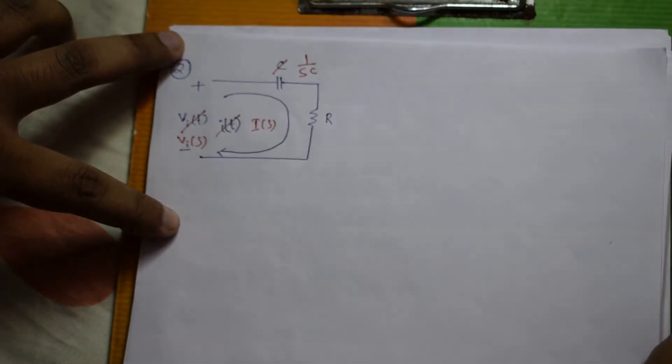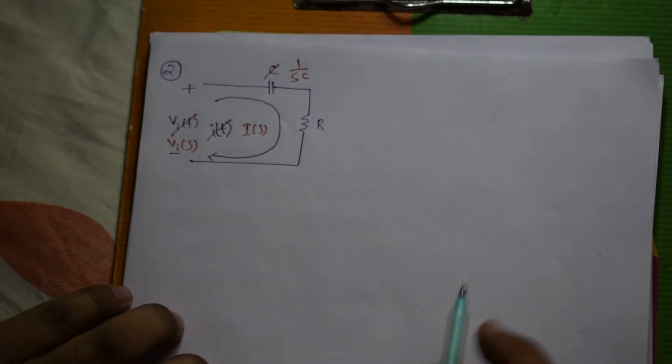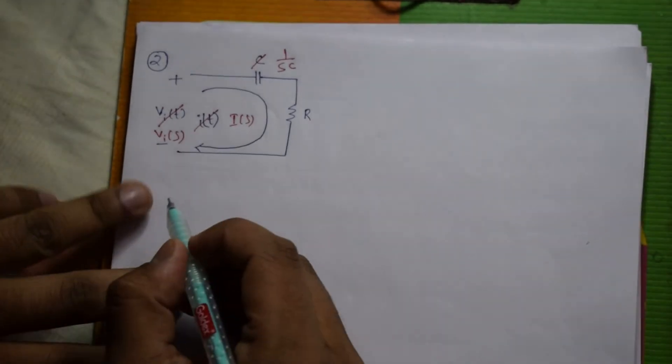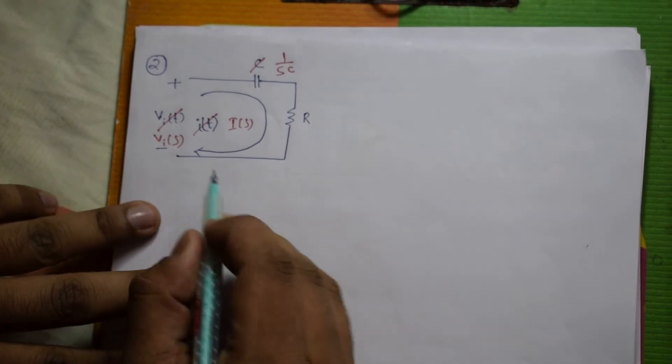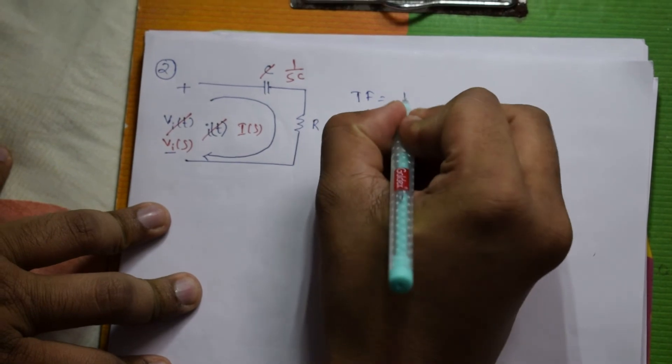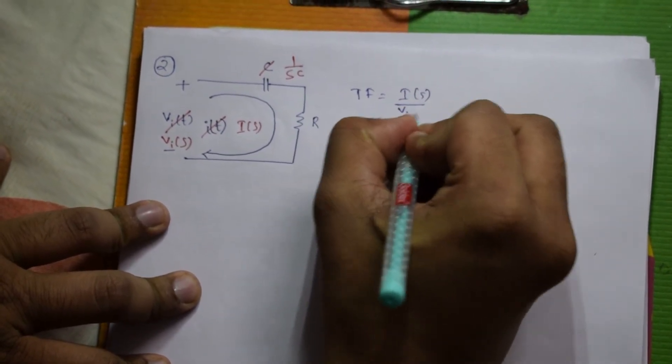First of all we have to find which is our input and which is our output. In this example, Vi(S) is our input and I(S) is our output. So our required transfer function is I(S) by Vi(S).